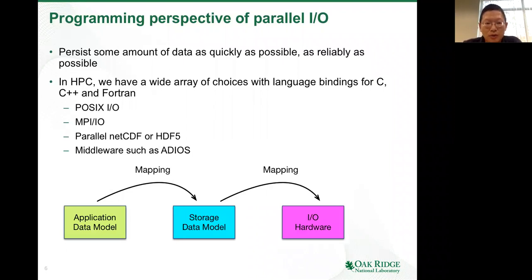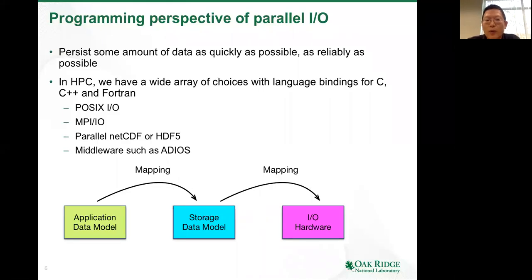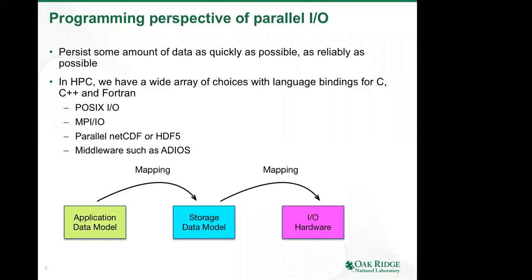Moving to the programming perspective: the task at hand is to persist some amount of data as quickly and as reliably as possible. In HPC we have many choices—it can be as simple as POSIX I/O, or we can use MPI-IO, parallel NetCDF, or HDF5. I don't have detailed programming scripts to illustrate all of these choices, but I've provided reference links at the end of the talk which have more thorough tutorials and documentation.